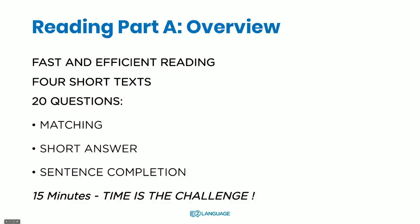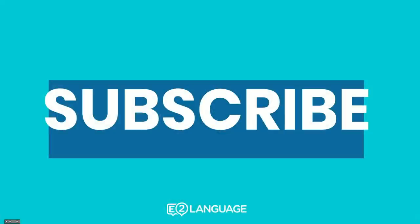Let's do a little overview of Reading Part A. Reading Part A is about fast and efficient reading. You'll get four short texts and 20 questions based on those four texts. You'll get matching questions, short answer questions, and sentence completion questions. And you have only 15 minutes to answer 20 questions — yikes. That's one question in less than one minute. So time is the challenge of this subtest.